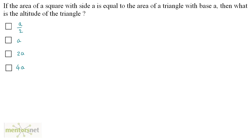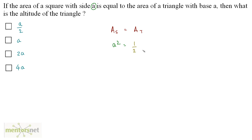The area of the square is equal to the area of the triangle. So I can write A_square = A_triangle. The area of a square is side², and we have been given the side as A. So A² equals the area of a triangle, which is half times base times height.